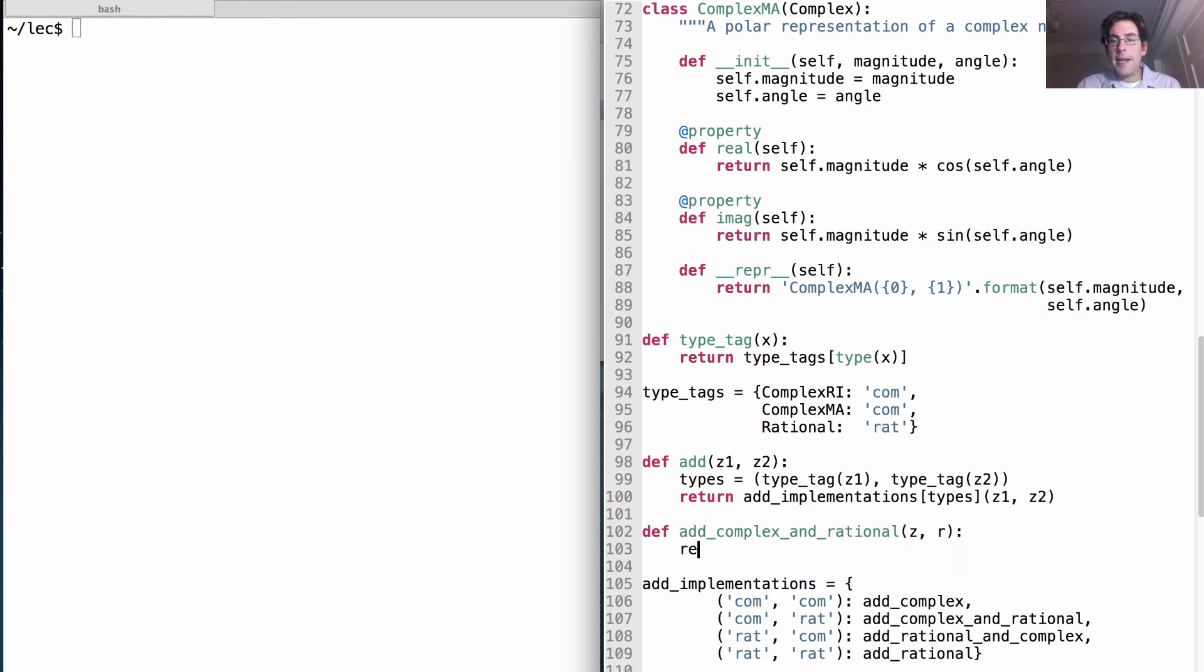z and r can be added together by returning a new complex number. Remember, we add together the real part of z and a floating point representation of r. And then keep around the imaginary part of z.